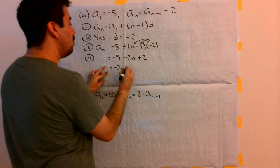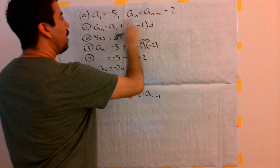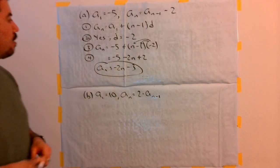I get negative 5 plus 2, which gets me negative 3, and that's how you convert a recursive rule to an explicit.